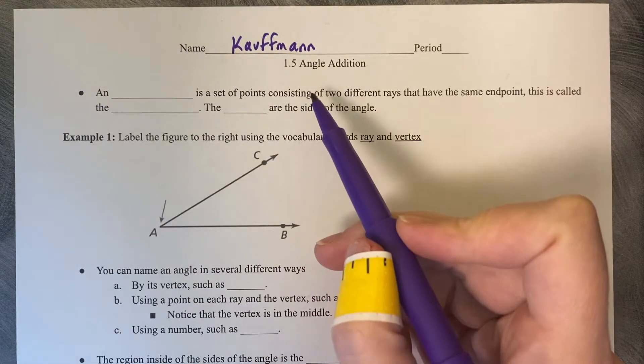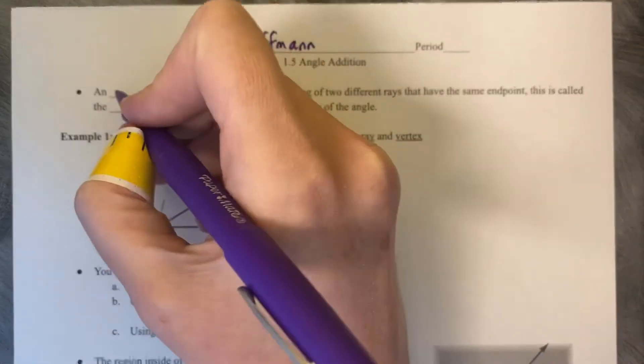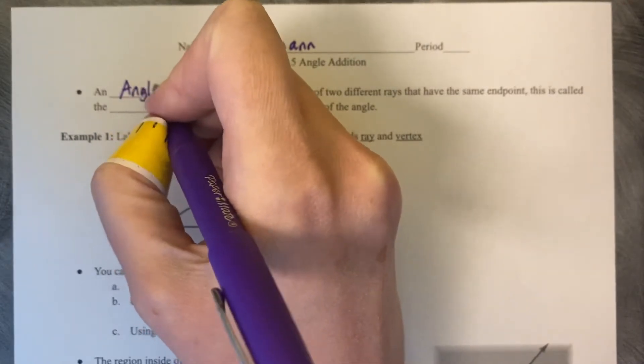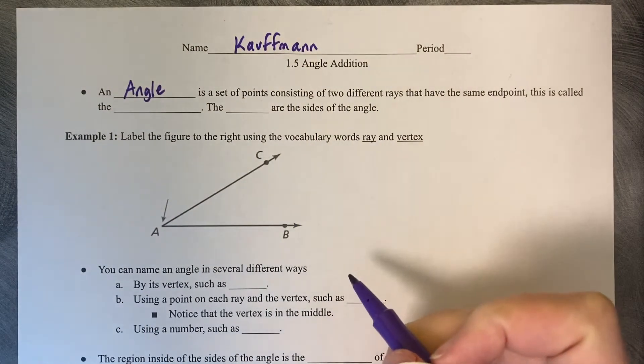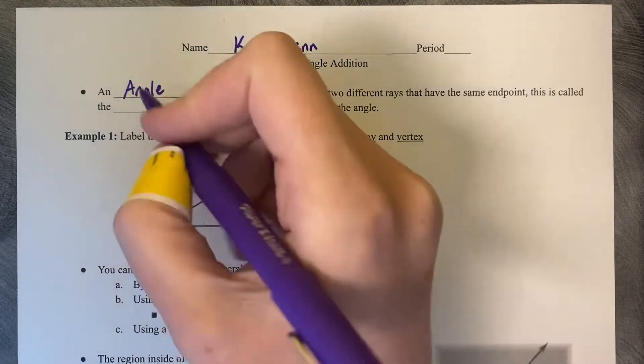1.5 Angle Addition. An angle is a set of points consisting of two different rays that have the same endpoint. This is called the vertex.